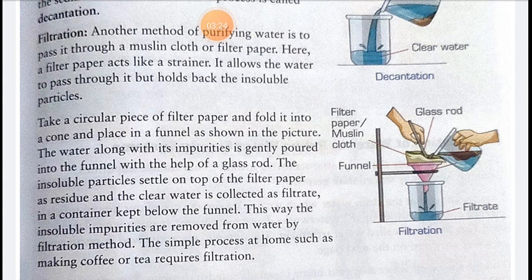As shown in the diagram in the video, water along with impurities is gently poured into the funnel with the help of a glass rod. The insoluble particles settle on top of the filter paper as residue, and the clear water is collected as filtrate in a container kept below the funnel. This way, insoluble impurities are removed from water by the filtration method.